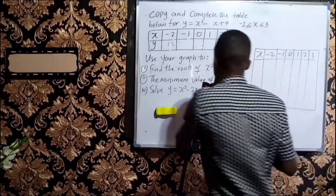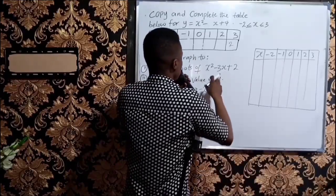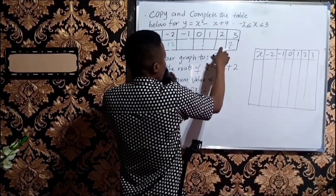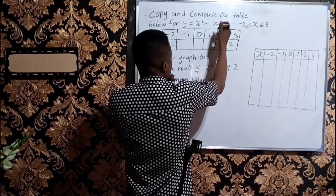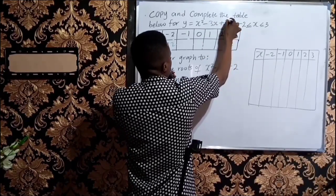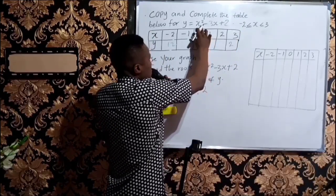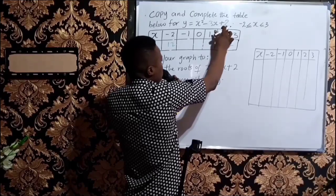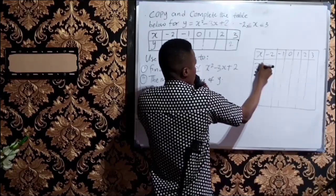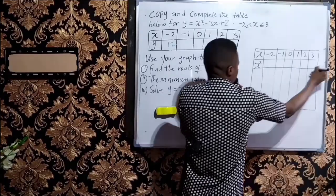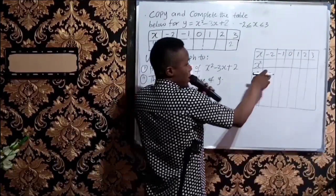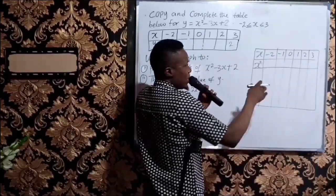After writing out these values of x, the next thing you write is the first element of the quadratic equation. The quadratic equation is x squared minus 3x plus 2. So the first element here is x squared — you plug in x squared, which means you are squaring the values of x.